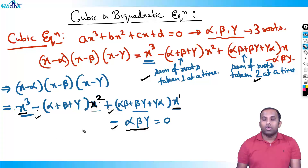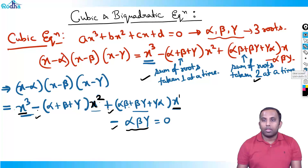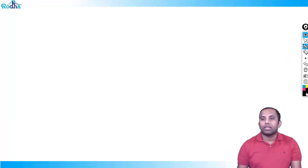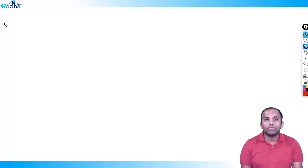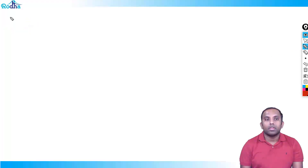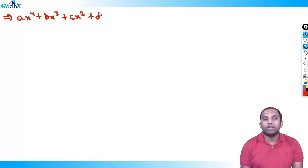So what we can see from here: let's now practice this for a bi-quadratic equation. A bi-quadratic equation is of the form: ax⁴ + bx³ + cx² + dx + e = 0.